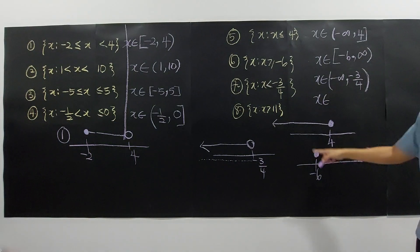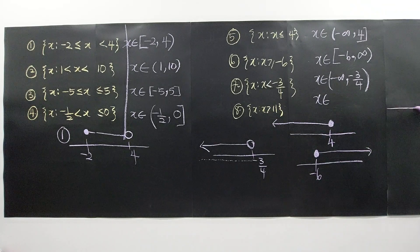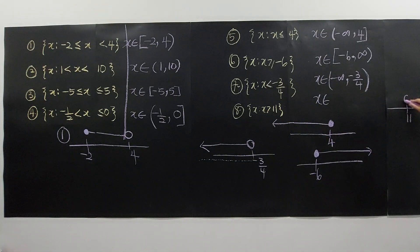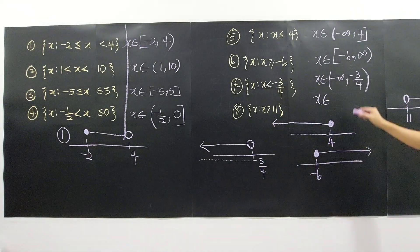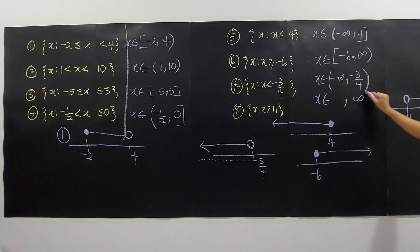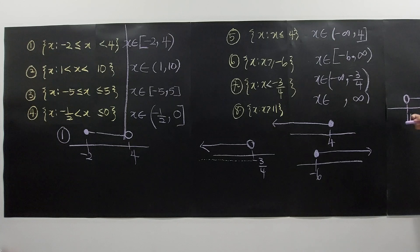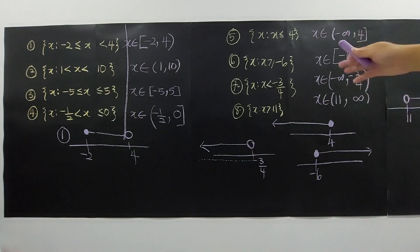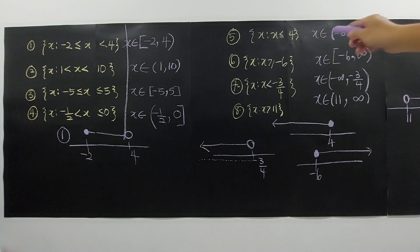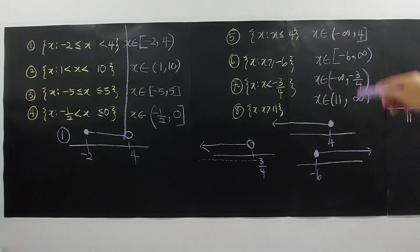For X greater than 11, we use an open bracket since 11 is not included. The arrow on the number line points to the right, indicating all values larger than 11. So 11 is the smallest value here, and the interval extends to positive infinity. We write this as (11, positive infinity), with open brackets on both sides.